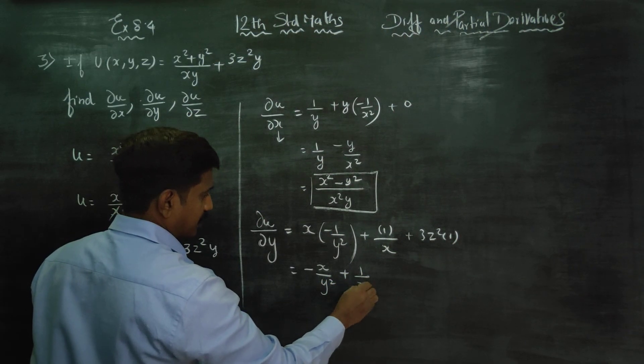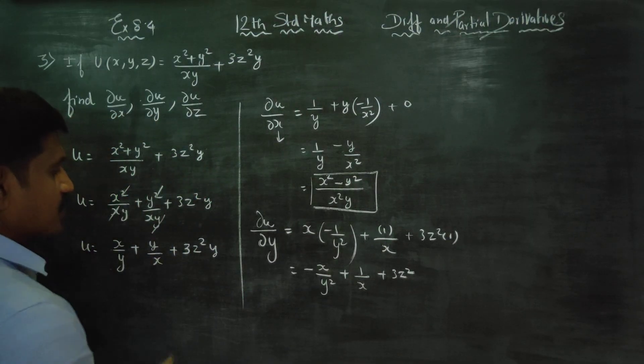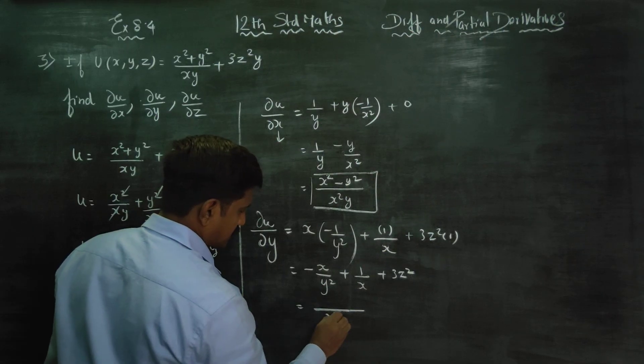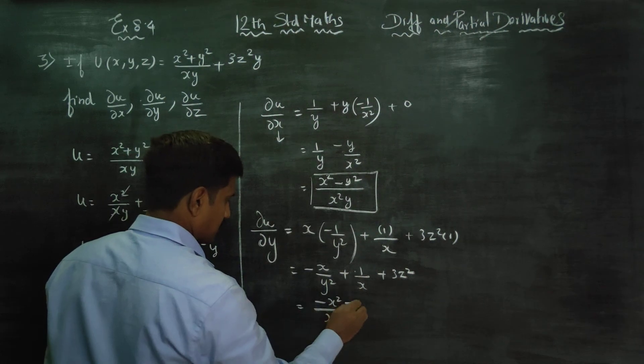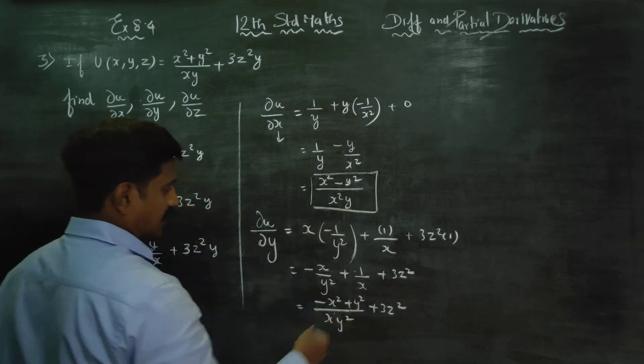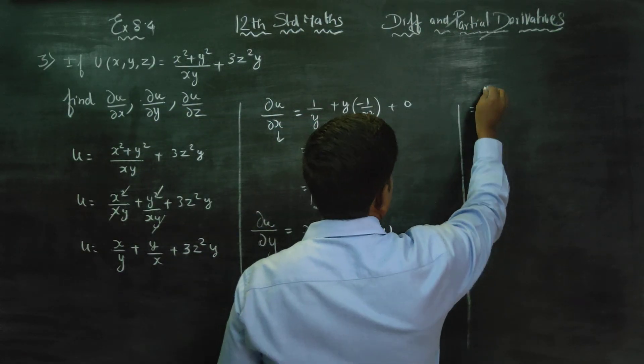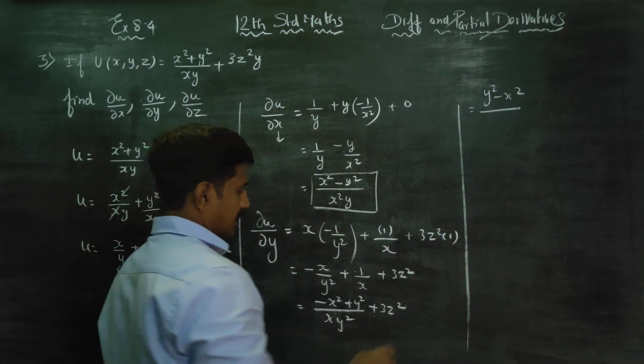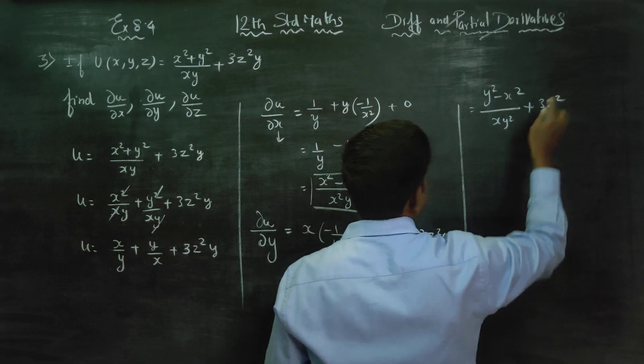It is minus x by y square plus 1 by x plus 3z square. If you want you can take LCM: x square y, which gives y square minus x square by x y square plus 3z square. This is the second answer.